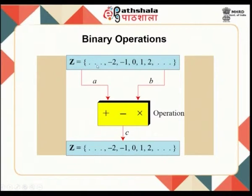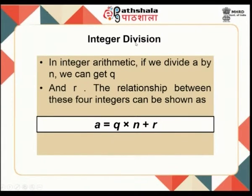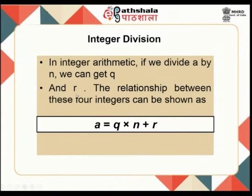These operations take two values A and B from the set of integers and the result C is again in the set of integers. For integer division, if we divide A by N we get quotient Q and remainder R. The relationship between these four integers is: A = Q × N + R, where Q, N, and R are all integers.